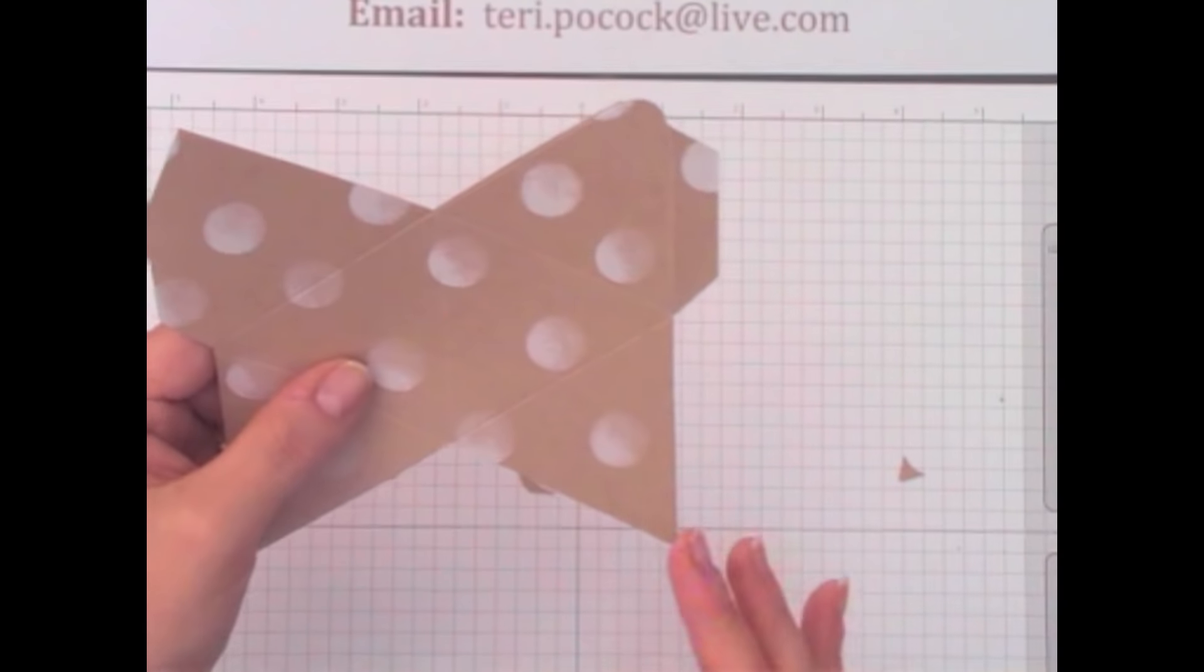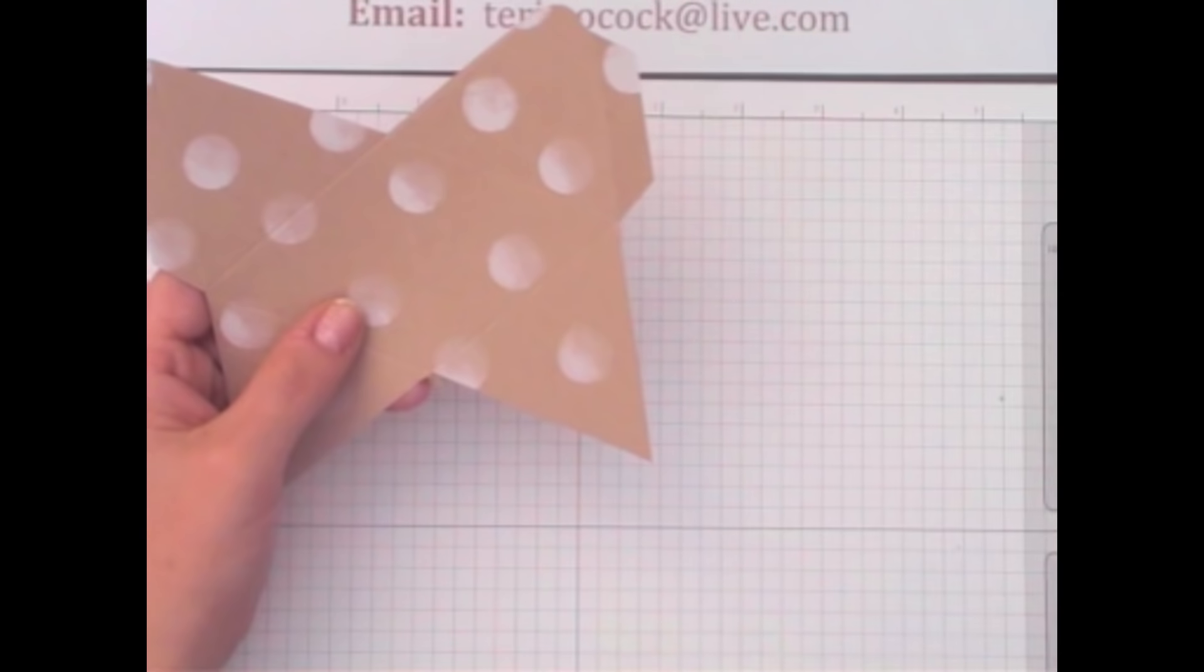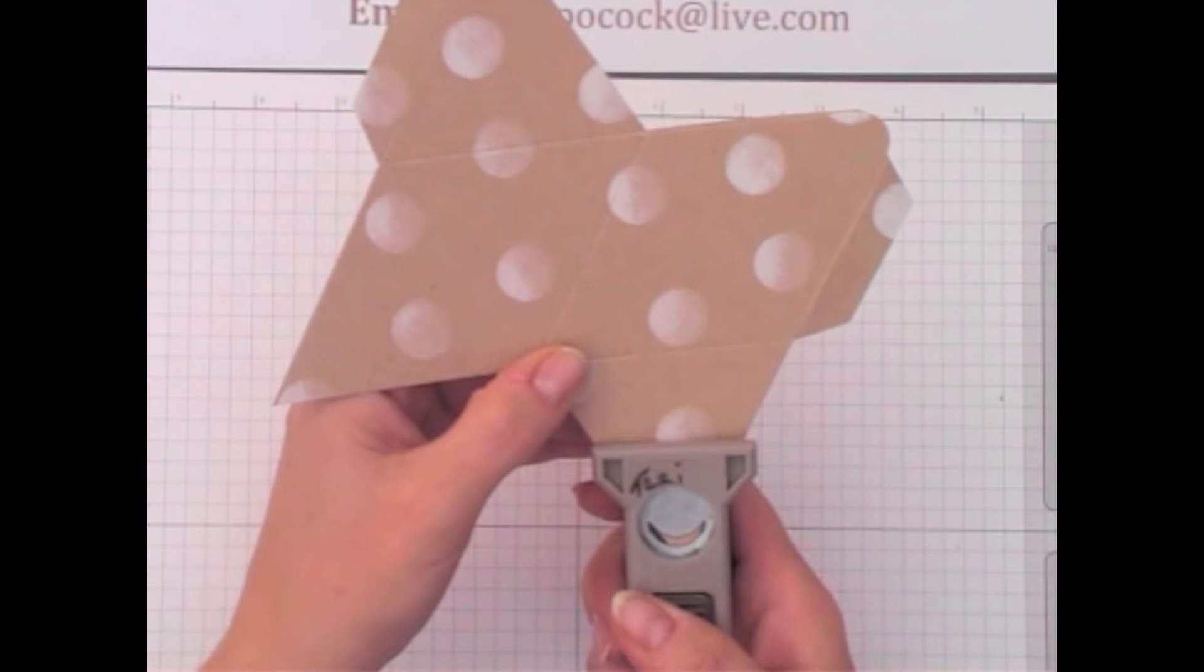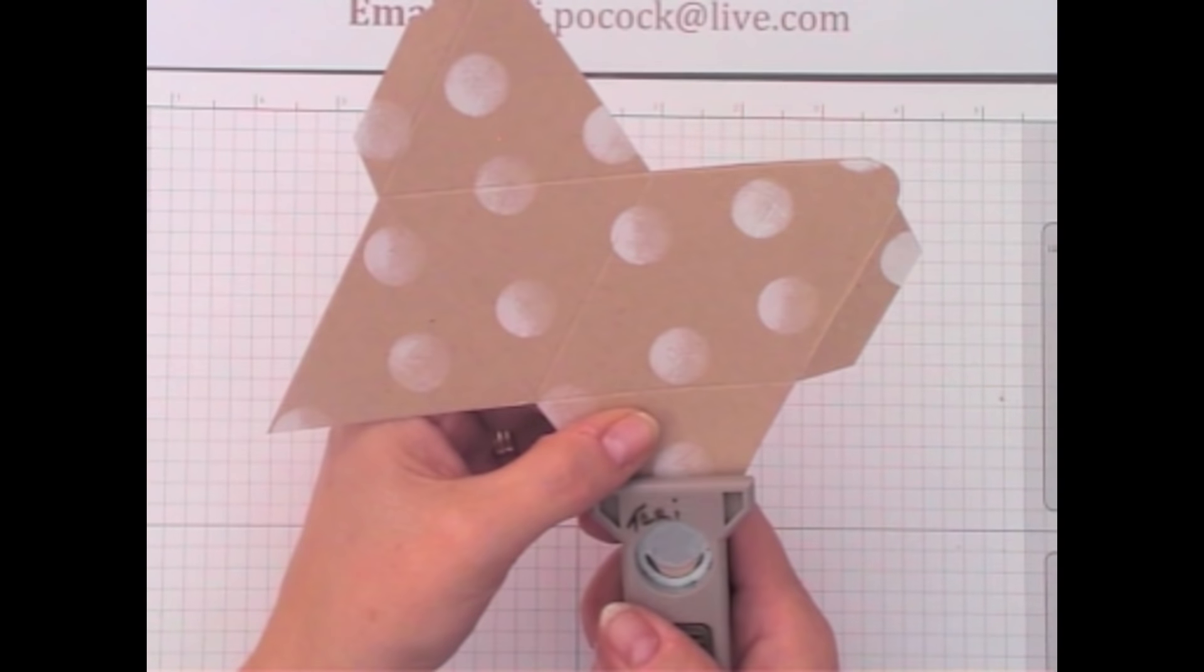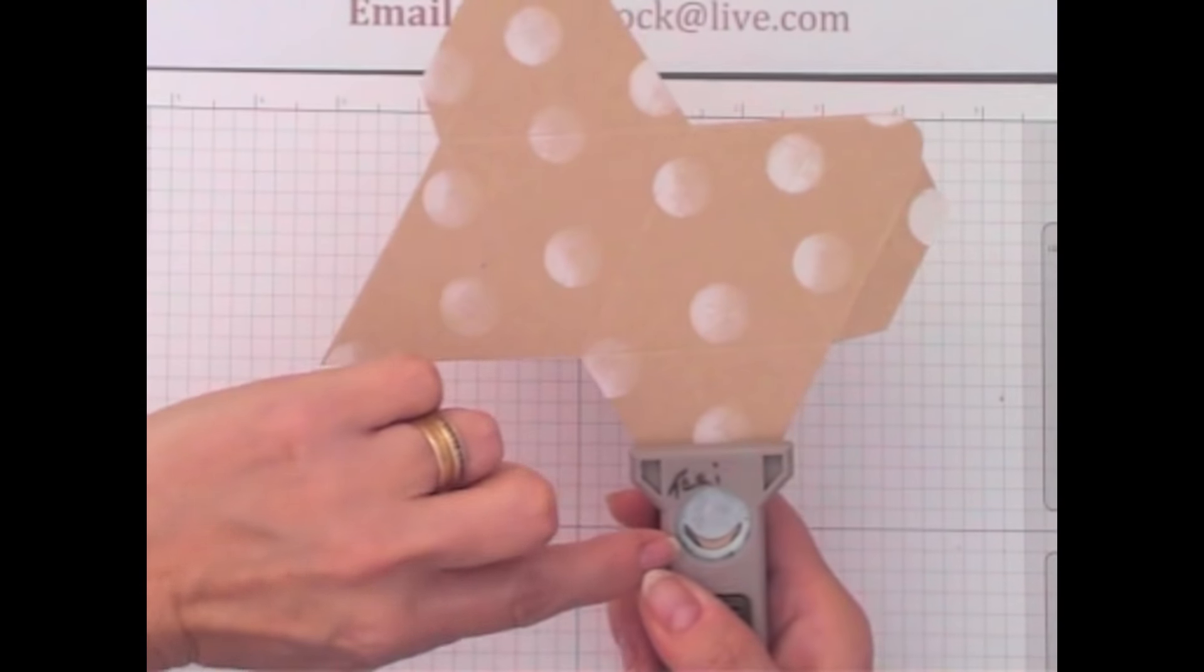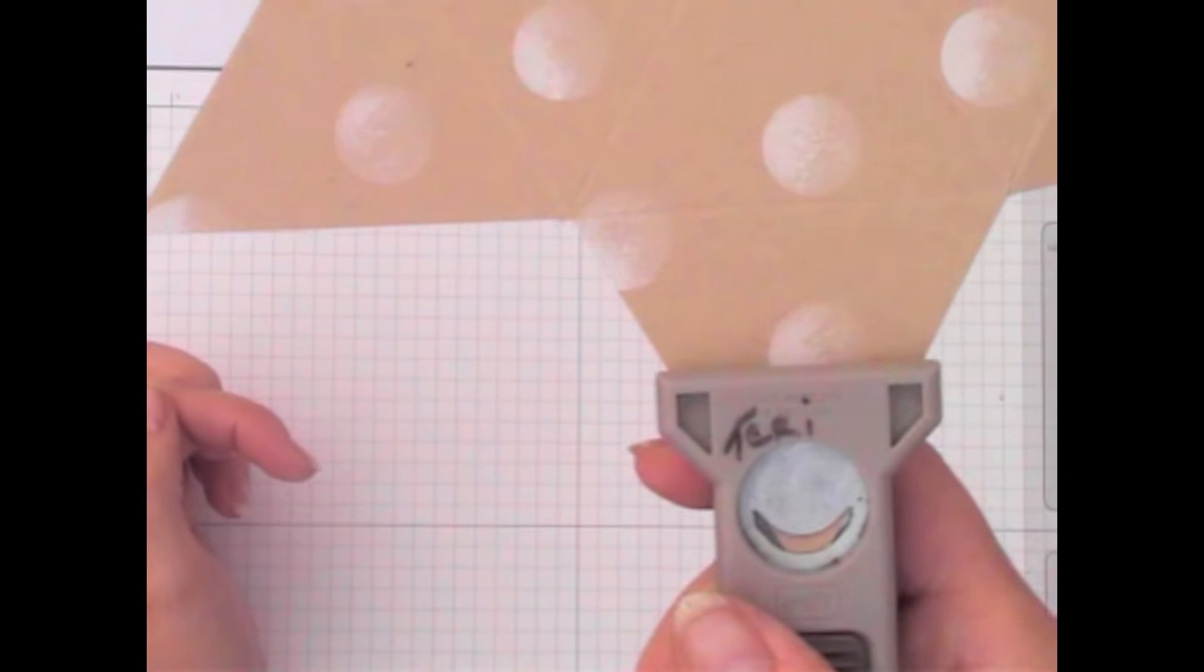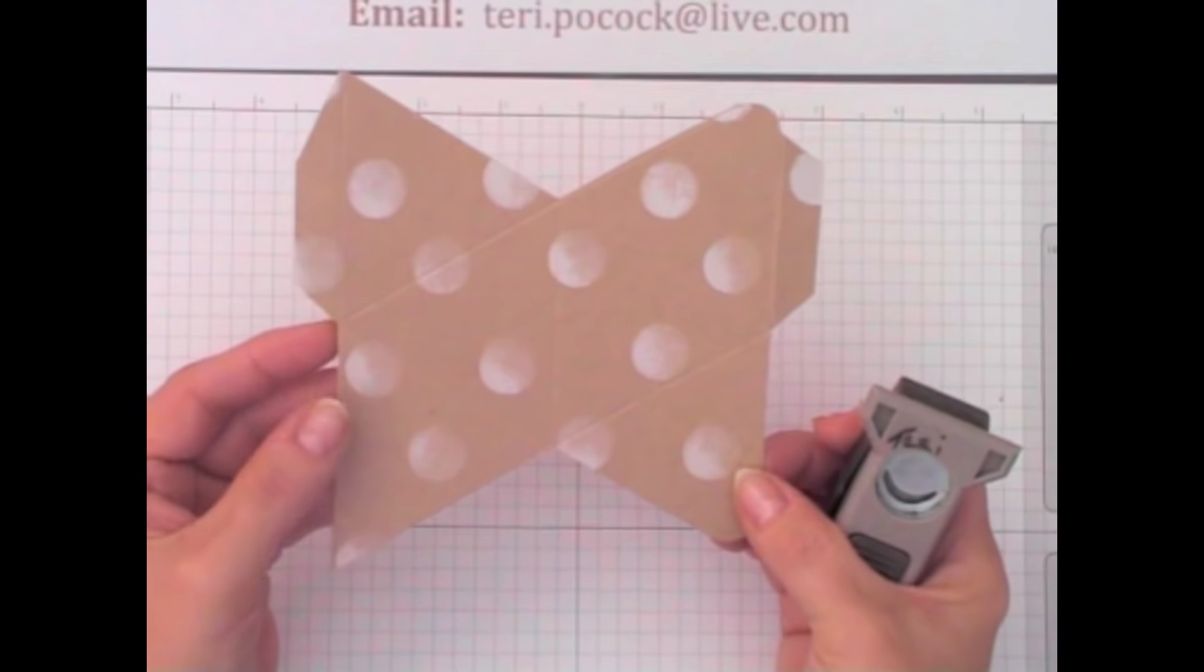Then you want to repeat that on the bottom point. So it's on the same side. We want to put that point into the punch and again I push it in until the side edges of my cardstock meet the bottom points of that curve on the punch. Then just punch it.